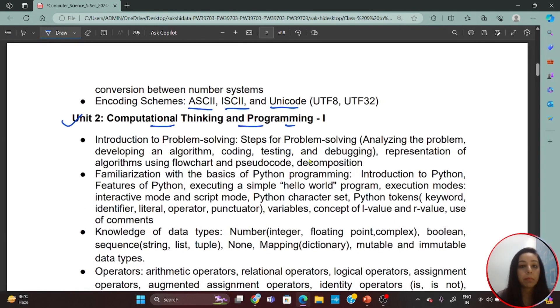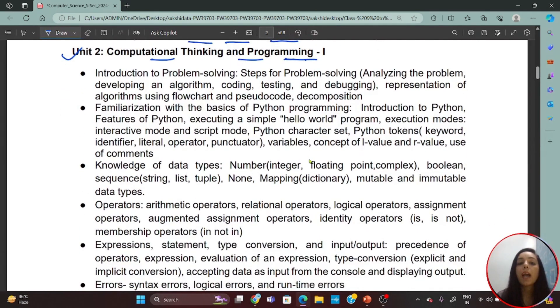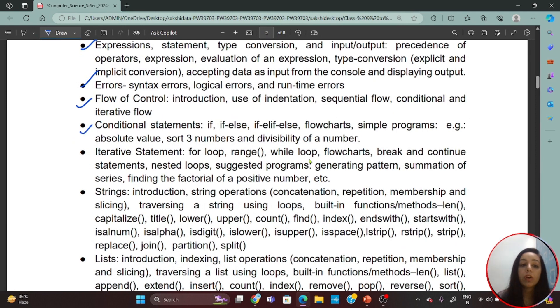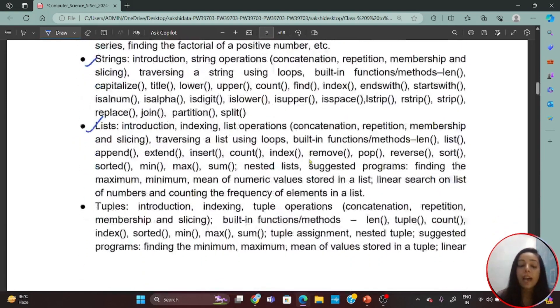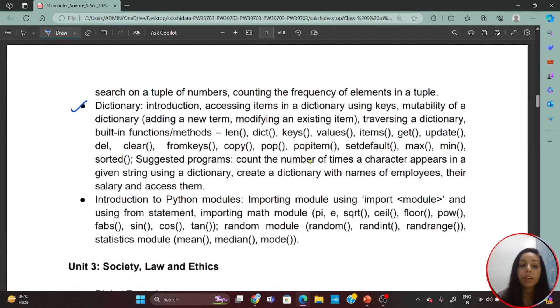In Unit 2, that is Computational Thinking and Programming Part 1 (Part 2 is in Class 12), you will study first of all, before you study Python, you will study problem-solving, what is the algorithm, what is testing and debugging, what is the programming language, which is a major thing to understand any programming language. First of all, you will understand theoretically. After understanding this, you will come to the basics of Python programming. You will study a small program like Hello World. These are all topics you will use in the 12th. So you will do this unit very well, that is good for you. Because in Class 12, the first two chapters cover the whole syllabus which has been shown here in the second unit.